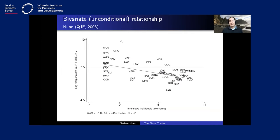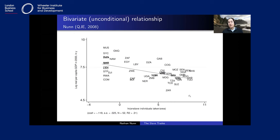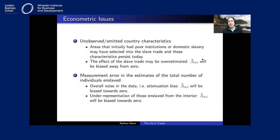The first statistical test is to look at the relationship between the number of individuals enslaved — normalized by the size of the country — and per capita GDP today, shown on a log-log scale. What you find is a negative relationship: countries or areas that today are countries which had more individuals taken are poorer today, as measured by per capita GDP.